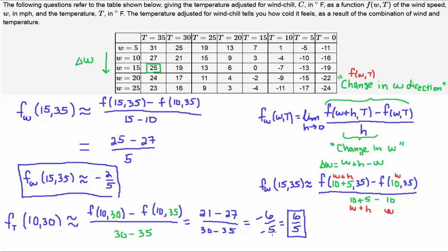That means I'm taking 21 minus 27 over 30 minus 35. And that reduces to minus 6 over 5, which is 6/5. And that's how you kind of approximate these partials. Remember, partials keep one of the variables constant.